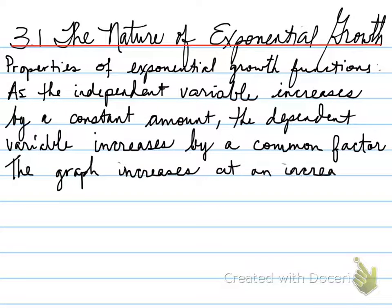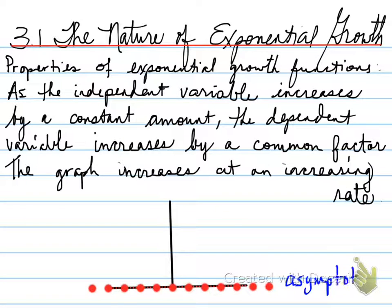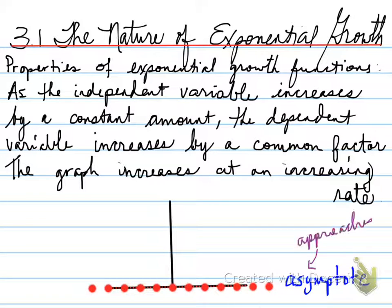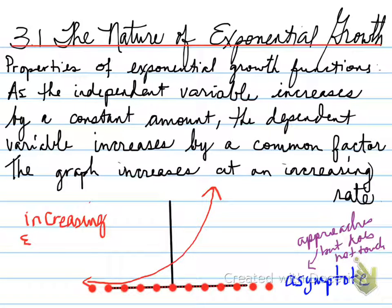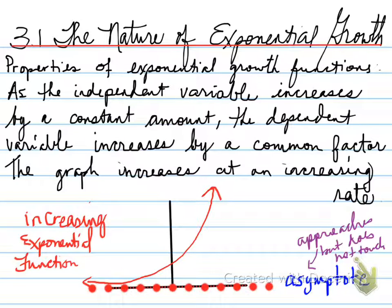The graph increases at an increasing rate. We have something called an asymptote, which is a dotted line across the bottom — an imaginary line which the graph doesn't touch. When we sketch a graph of an exponential function, we sketch the asymptote, though graphing technology often doesn't show it. An asymptote is a line that the graph approaches but does not touch. Moving from left to right, the y values increase at an increasing rate — this is an increasing exponential function, also known as exponential growth.